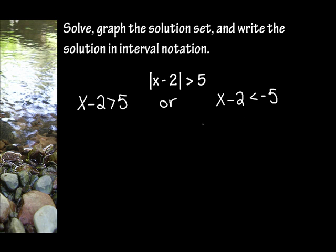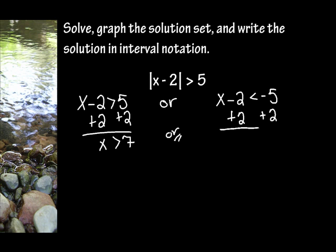Our next step is just to solve just like it was an equal sign. I'm going to add 2 to both sides of the inequality, so x is greater than 7. Or, I'm going to do the same thing here — add 2 — so x is less than negative 5 plus 2, which is negative 3.